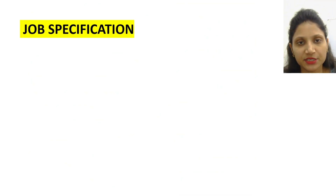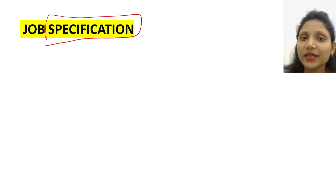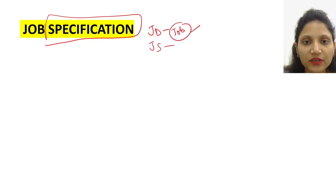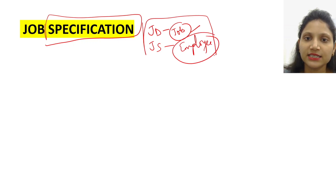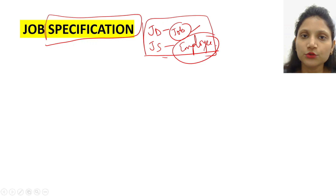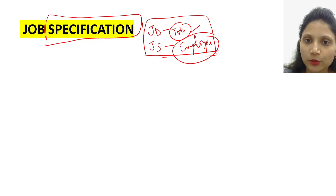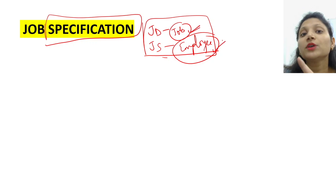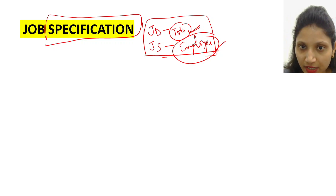So this was your job description. Now comes the job specification. Job description aur specification mein difference kya hota hai — yeh aapko hamesha yaad rakhni chahiye. Job description job ko describe karti hai, job specification us employee ko describe karti hai jo isi job ko karega. JD job se related tha, JS employee se related hai — screenshot le lo, wallpaper bana lo, hamesha yaad rahega!